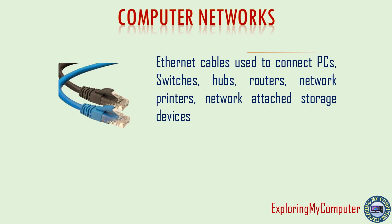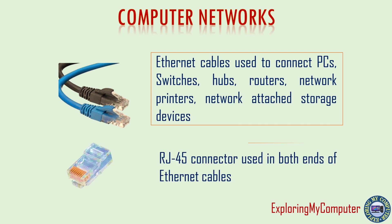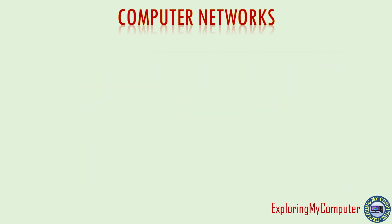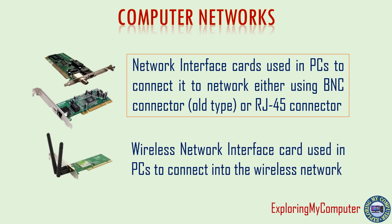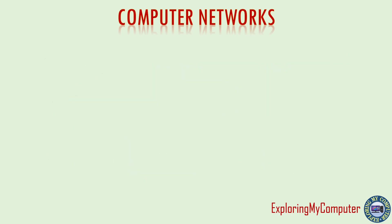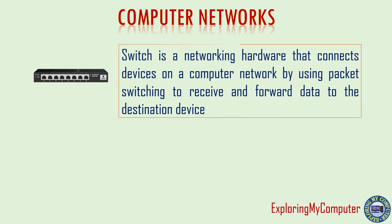Ethernet cables are used to connect PCs, switches, hubs, routers, network printers, and network-attached storage devices. RJ45 connectors are used at both ends of ethernet cables. Network interface cards are used in PCs to connect to a network using either a BNC connector (old type) or RJ45 connector. Wireless network interface cards are used in PCs to connect to a wireless network. A network switch connects devices on a computer network using packet switching to receive and forward data to the destination device.